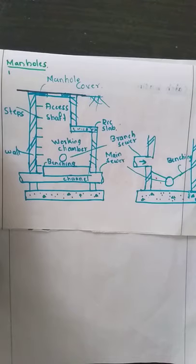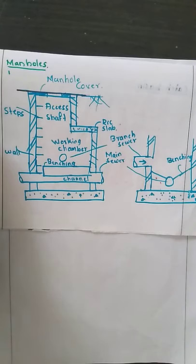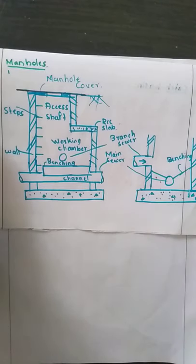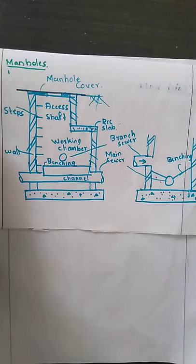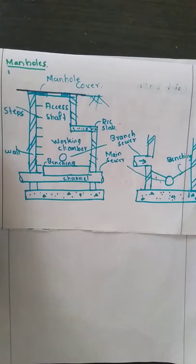Manholes are provided in order to have inspection, maintenance, testing, cleaning, and the removal of obstructions from the sewer line. Wherever two sewer lines pass or wherever there is a junction, manholes are provided for all maintenance works. The manhole is very important for your examination; you need to draw both diagrams. You can see the branch sewer line and the main sewer line — wastewater passing from the main sewer line to the branch sewer line passes through the benching.